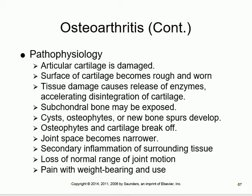The cartilage breaks down through tissue damage from joint abuse and enzymes released in the process. Additionally, new pathological structures start to develop within the joint: cysts and osteophytes (bone spurs) - abnormal bone growth within the joint. These osteophytes create more friction and further limit movement. The joint space narrows and movement becomes increasingly difficult.